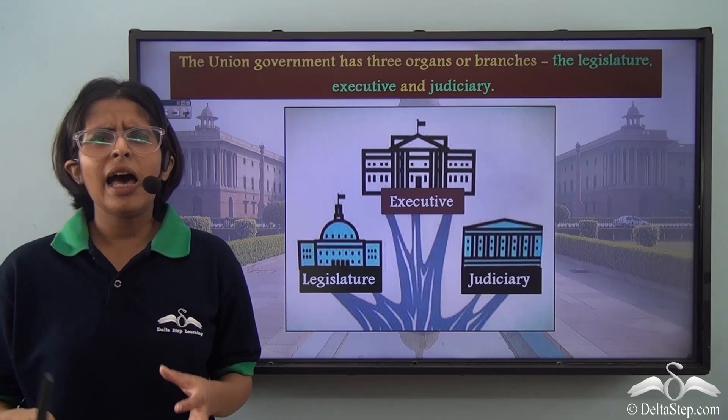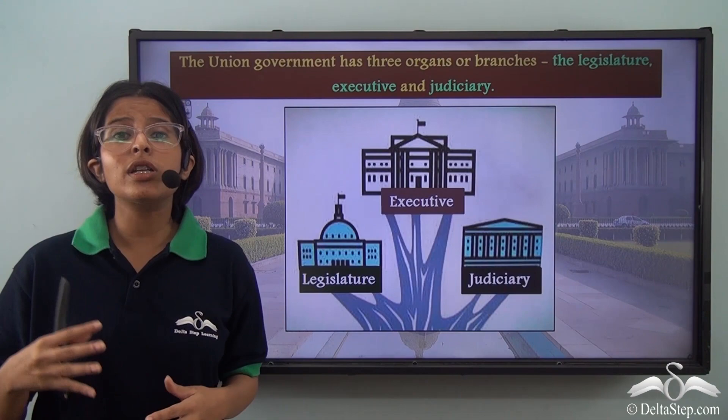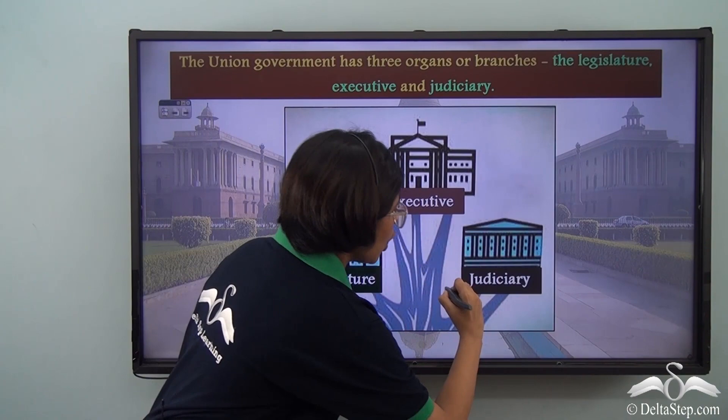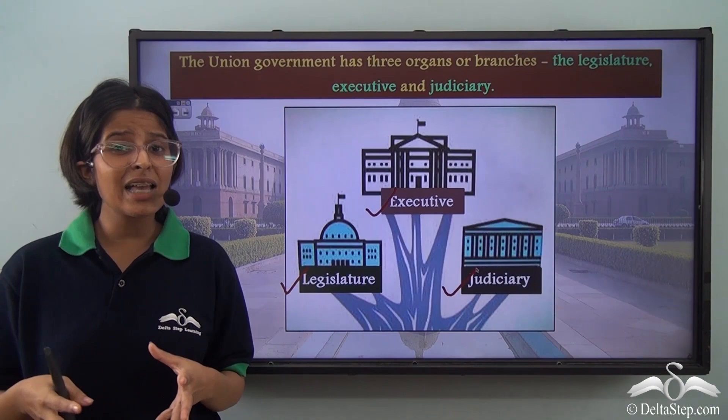The government of India is a huge body with many roles and responsibilities. So it divides its powers and administrative responsibilities to different bodies — such as the legislature, the executive, and the judiciary — the law-making body, the law-implementing body, and the law-interpreting body. These organs have specific functions that make the working of the government smooth and efficient.